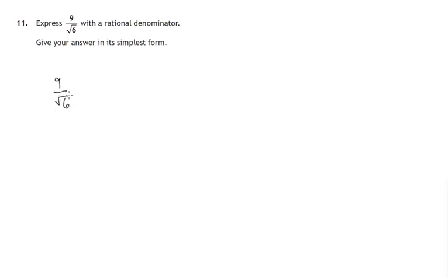Rational denominator means we can't have a square root sign in here. We need to have a number without that square root sign.